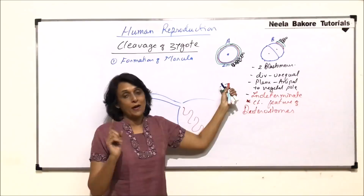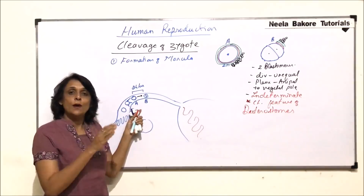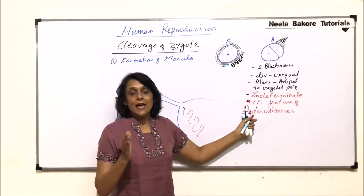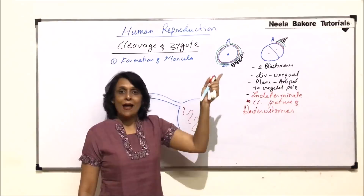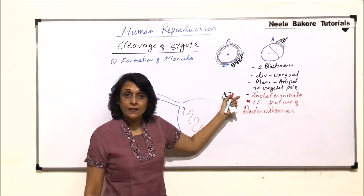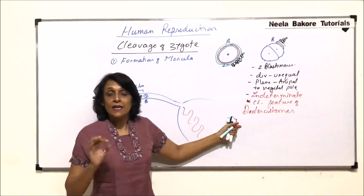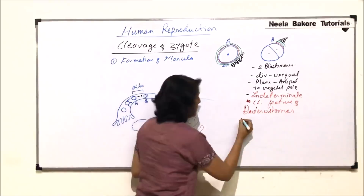What do we know about the first division? It takes place after 24 hours of fertilization. In some books, the time period is given as 24 to 30 hours, but normally 24 hours is considered. The division is unequal — it results into formation of two blastomeres, one larger and one smaller. The plane is through the animal-vegetal pole. And it is indeterminate, meaning the fate of these cells is not decided yet. Each cell is capable of giving rise to a complete individual.